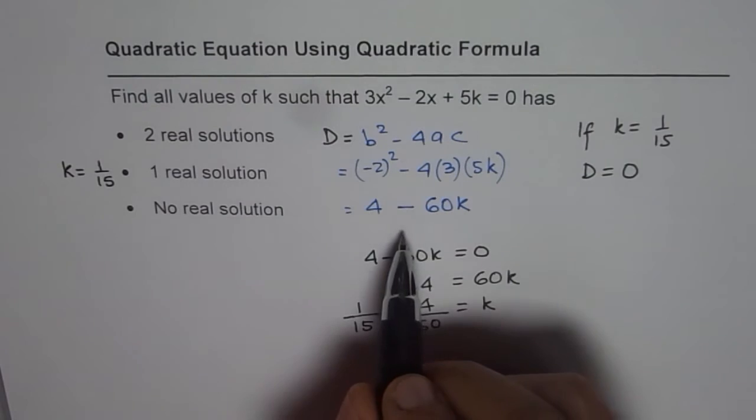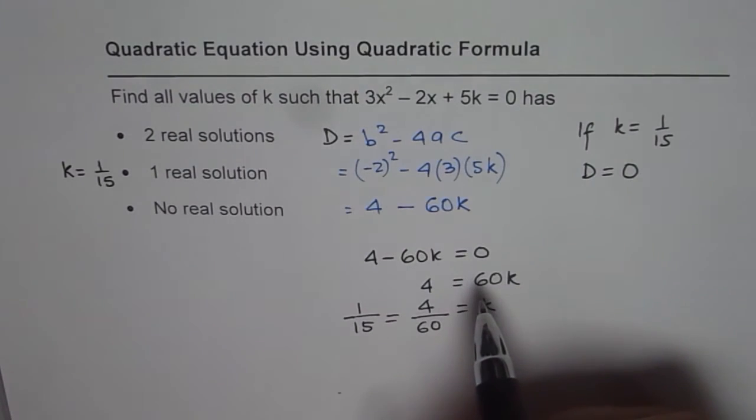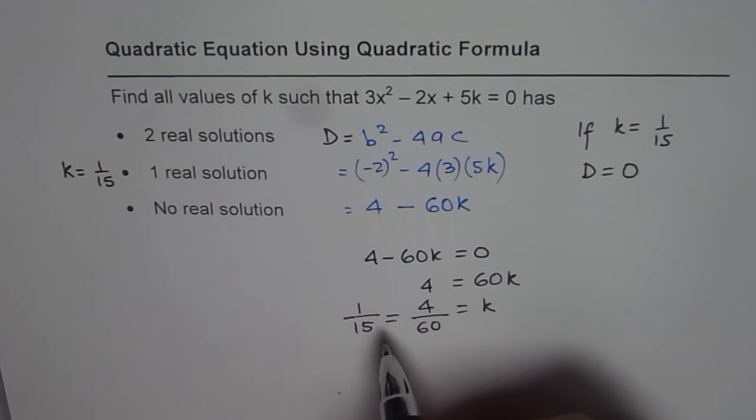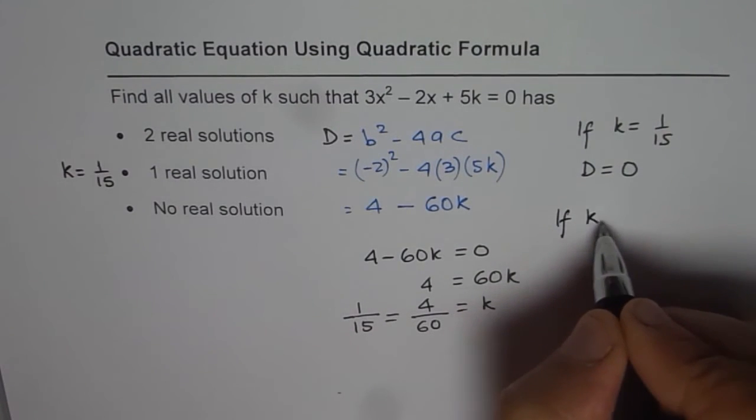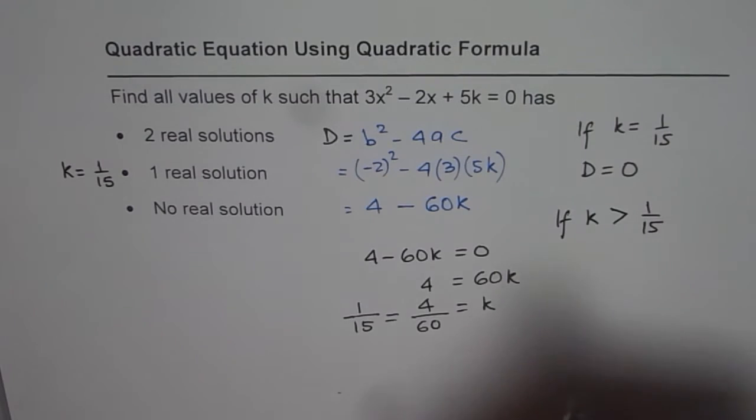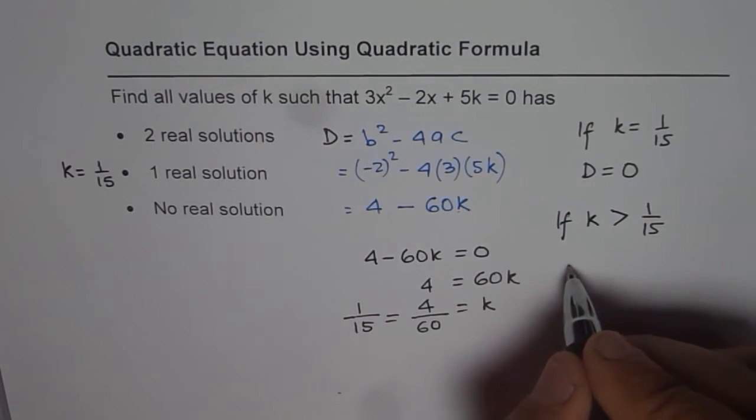Now we have to see if k is greater than 1/15, then whether discriminant will be positive or negative. That is what you should figure out. If k > 1/15, in that case, -60k will be greater.